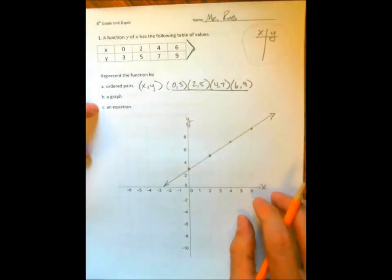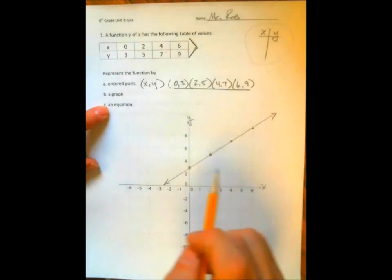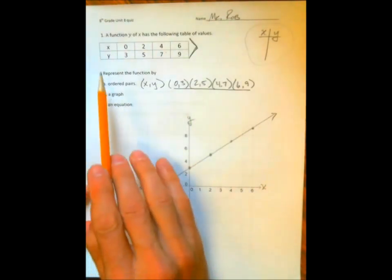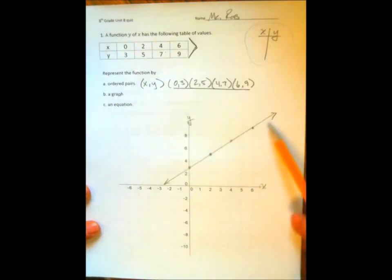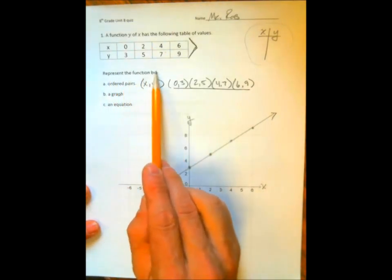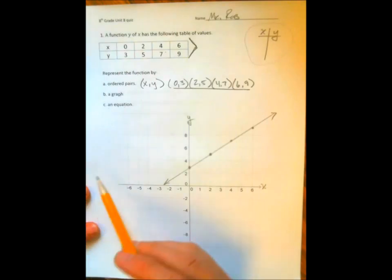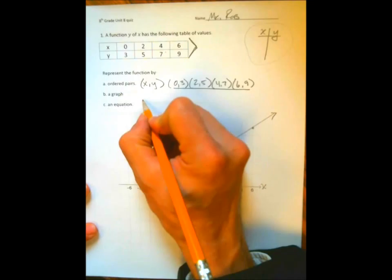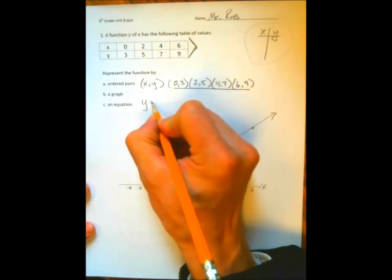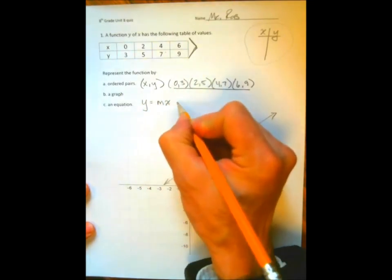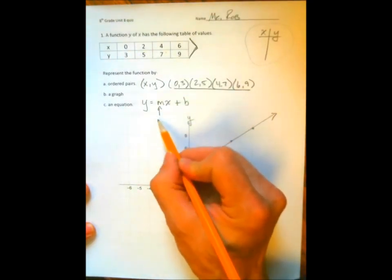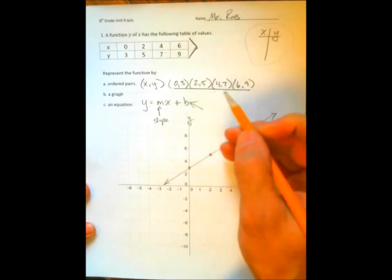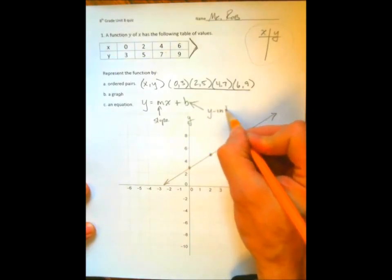Now it says at the very last that we want to represent this function by an equation. Well, you've got to think about what an equation means. Remember, the equation for a line is y equals m times x plus b, where m is the slope, and b is the y-intercept.